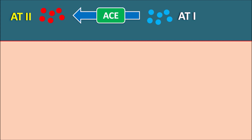Once angiotensin 2 is formed, it can act on angiotensin receptors expressed on target organs like vascular smooth muscle and renal tubules. Angiotensin 2 can act on two types of receptors: AT1 and AT2. AT1 receptors are more important for increasing blood pressure. These AT1 receptors are expressed on vascular smooth muscle and are G protein-coupled receptors with seven transmembrane units. AT1 refers to angiotensin 2 receptor subtype 1 — not receptors for angiotensin 1.